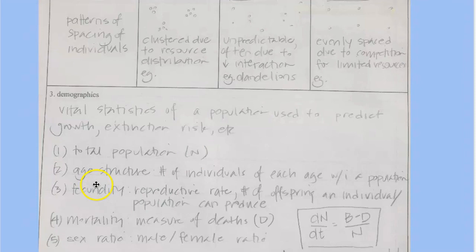And we use the capital letter N to describe total numbers of population. Also something that's called age structure. And age structure just refers to, in a population, the number of individuals of each age.